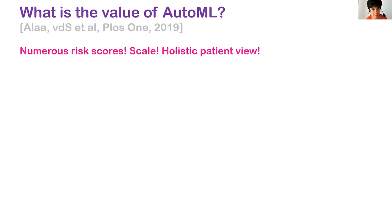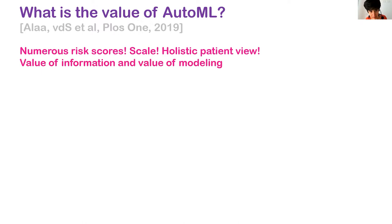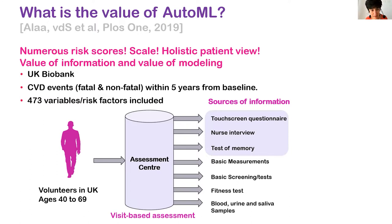An important part of the AutoML framework is the ability to identify the value of information and the value of modeling. For instance, using UK Biobank data with 473 variables, a prediction method was built for cardiovascular disease events. We can identify which variables were truly informative and for which subclass of patients — this is the value of information.